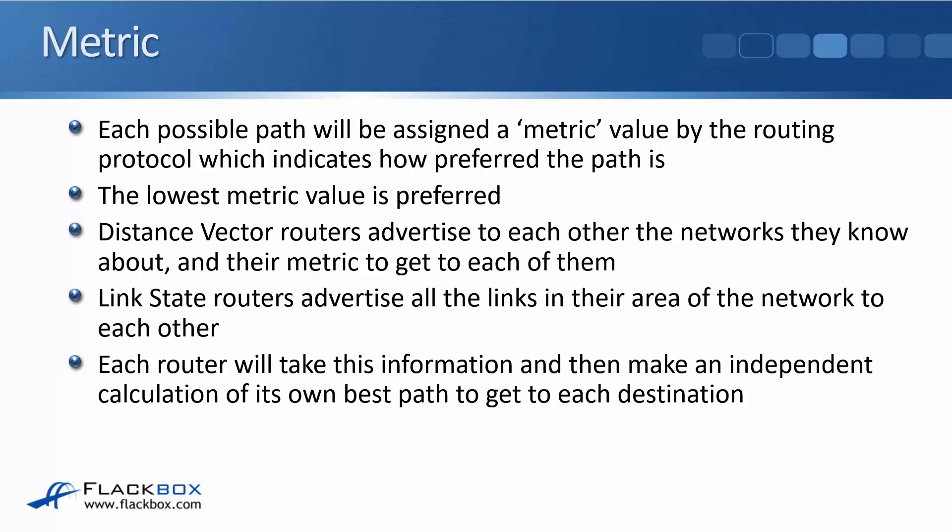An easy way to remember this is with OSPF — the name of the metric is cost. Just like if you go shopping, the lower the cost of something, the better it is. So remember, the lower the metric, the more preferred the path is going to be. Distance vector routers advertise to each other the networks that they know about and their metric to get to each of them. Link state routers advertise all the links in the area of the network to each other, and each router uses that information to independently calculate its own best path to each destination.